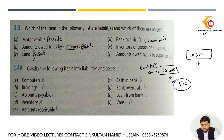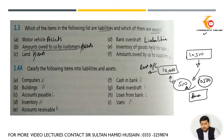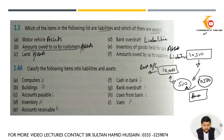You have ten thousand in your bank account, you wrote a ten thousand five hundred check, and the bank grants you the extra five hundred — that is known as bank overdraft. Inventory of goods held for sale is an asset, and amounts owed to a supplier is a liability.